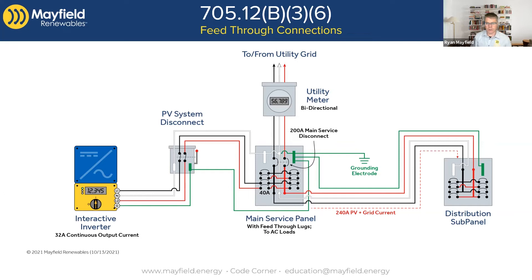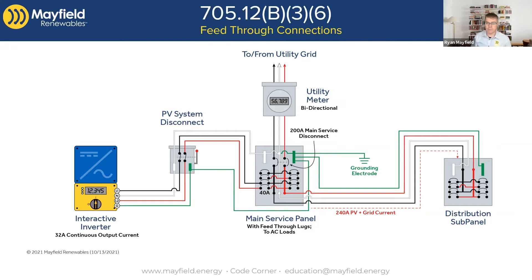As shown in the image, we would have 200 amps from the utility and 40 amps from solar, so we have a potential of 240 amps that feeder could see. We have to size the feeder appropriately. In a retrofit situation, that feeder is going to be rated at 200 amps because that's what the original installation was, and upsizing that conductor might be next to impossible or very costly.